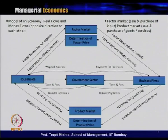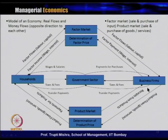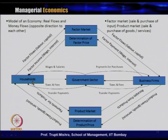Next, we look at a typical model of an economy — the different sectors and how they work, what are the money flows and real flows. In a typical economy there are several sectors: factor market, product market, household, business firm, and government sector. If we exclude the markets, there are three main sectors: household, government, and business firm.